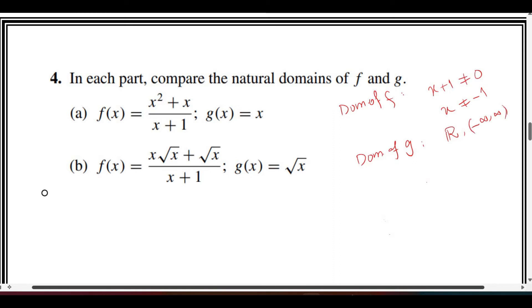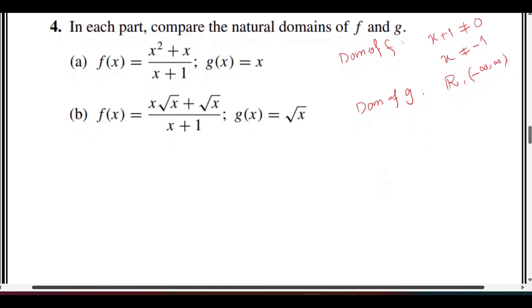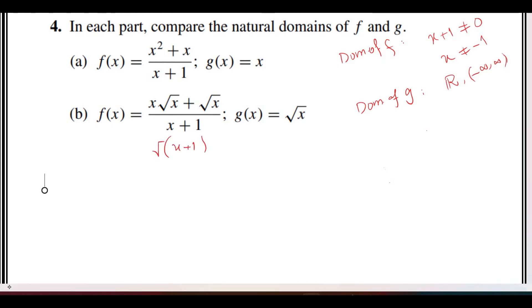Now in part b, if we look at f and take the square root common, we are left with x plus 1 in the numerator and denominator. They cancel out, and we are left with square root x, which is the same as g of x.